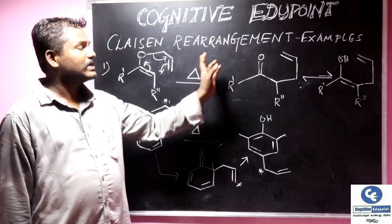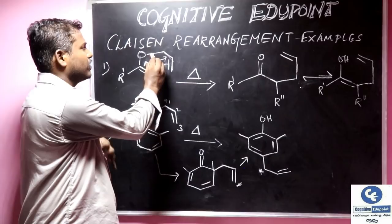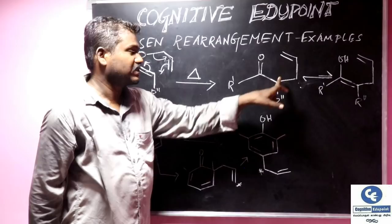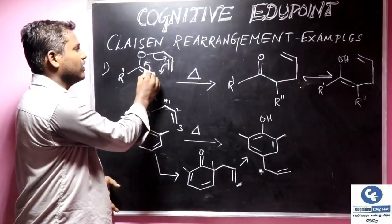Now, we will see the examples of Claisen's rearrangement. First example is an allyl vinyl ether, which rearranges to give us the ketone, the allyl-substituted ketone. We have a similar structure which we have discussed earlier.